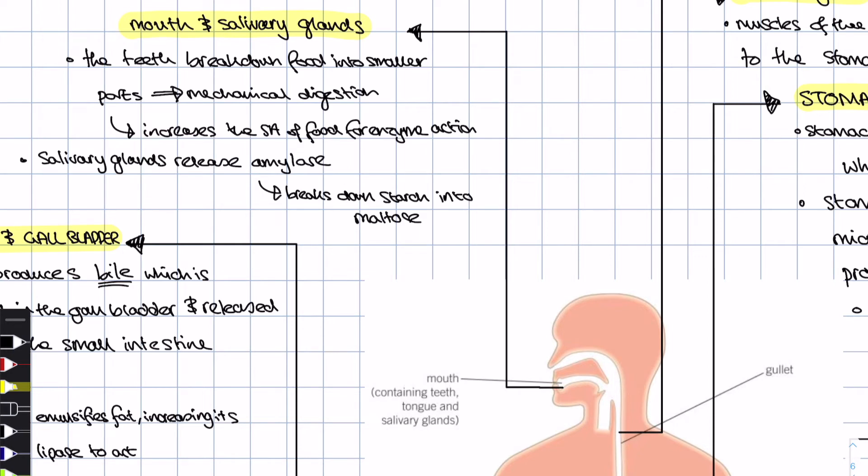The first thing that happens is that the teeth chomp on the food. They break it down into smaller parts. In biology, we call this mechanical digestion. It doesn't really involve many enzymes. It's just your teeth breaking the food into smaller parts. And what that does is it increases the surface area for enzymes to act on it and also makes it easier to swallow. The salivary glands, which are these two glands under the tongue here, are going to release that protein which we know called amylase, which breaks down starch into the sugar maltose.